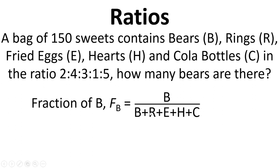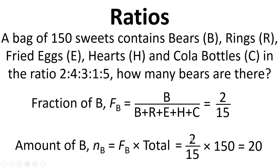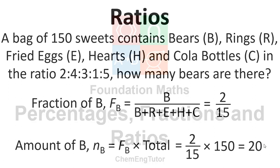so that's worked out from B divided by all of these numbers added together, so it's two divided by fifteen. Two because the ratio for bears is two there, and then when we add up all of these numbers together we get fifteen. The amount of B is the fraction times the total, so two over fifteen is the fraction of B, one hundred and fifty sweets in total in the bag. Multiply those together we get twenty.